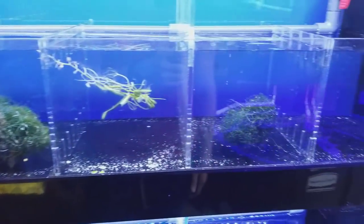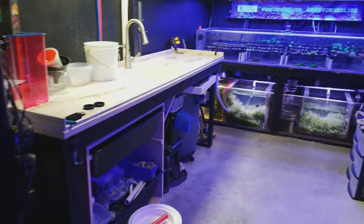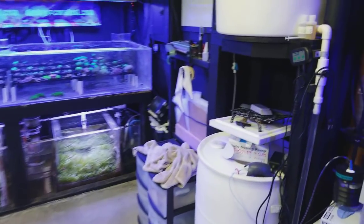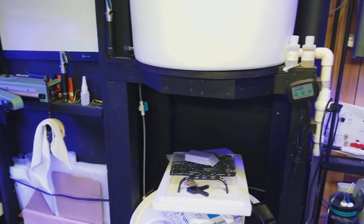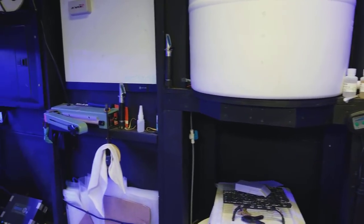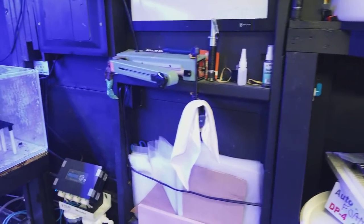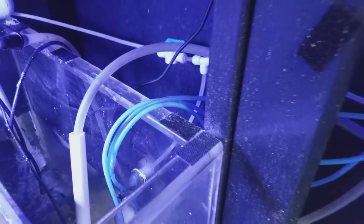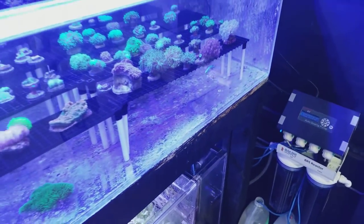So I have one RODI system that uses the quarter inch line and they all just run around right from here. So it's easy to shut it off, it's easy to control. If I'm working on something or draining a tank I can just shut it off. Each one has its own valve so that's nice.